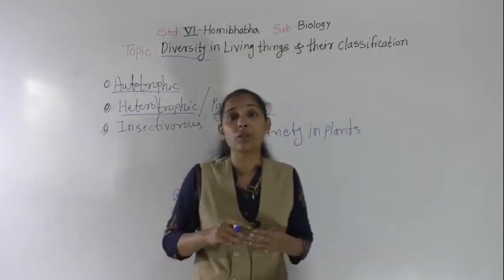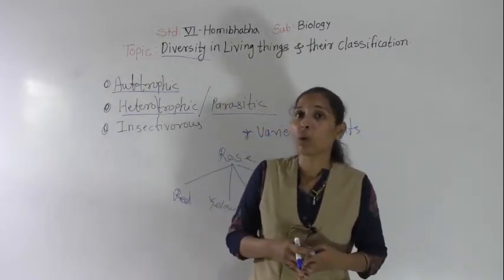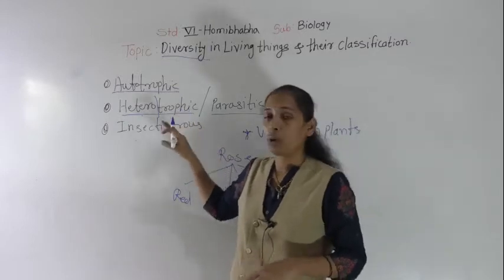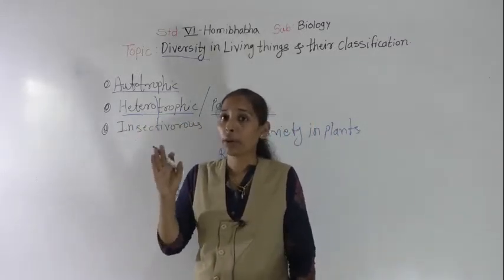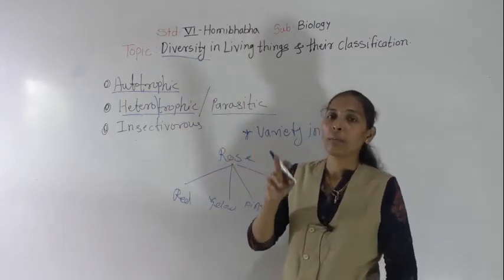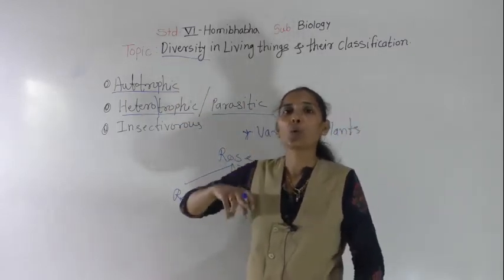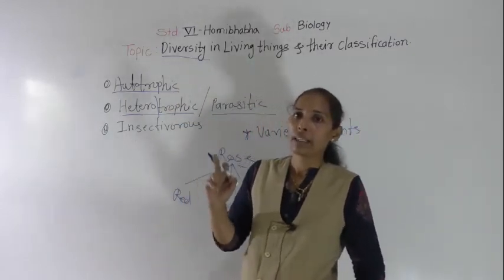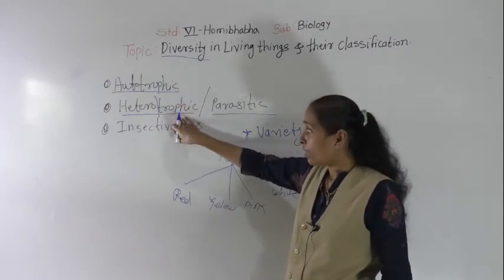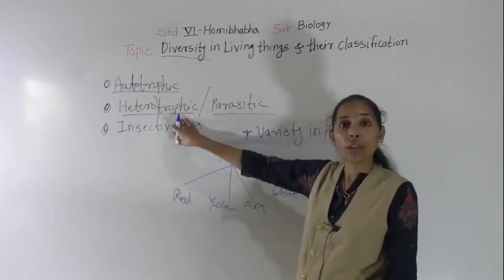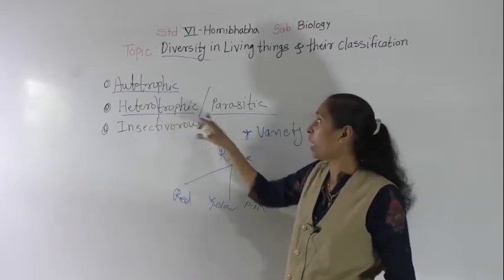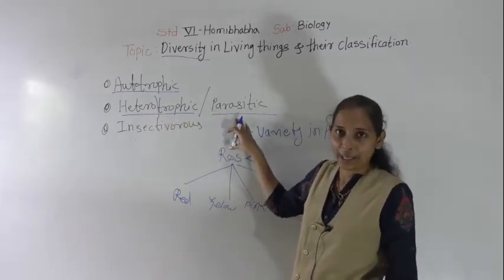So I hope you understand these two terms. Autotrophic plants are those which make their own food. Heterotrophic or parasitic plants are those which depend on others for their food.